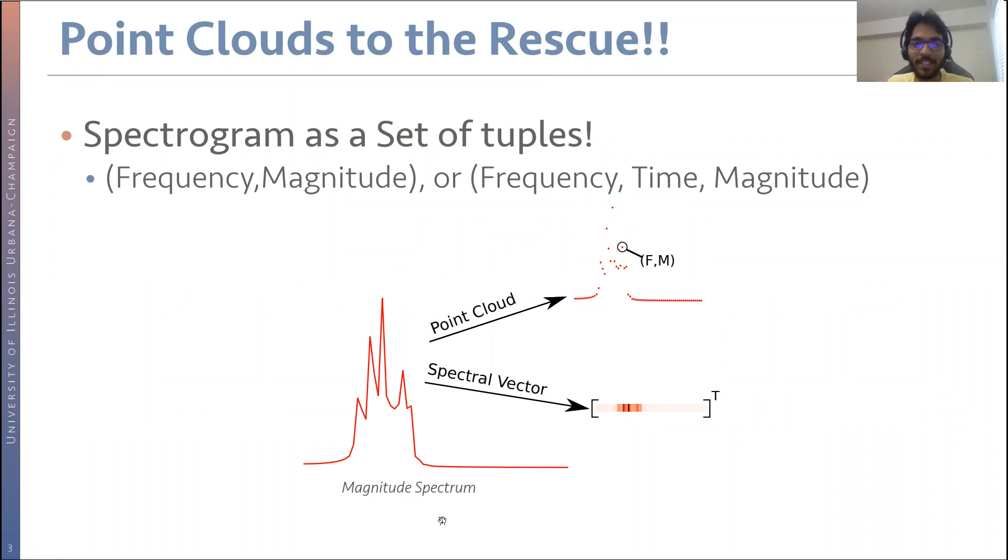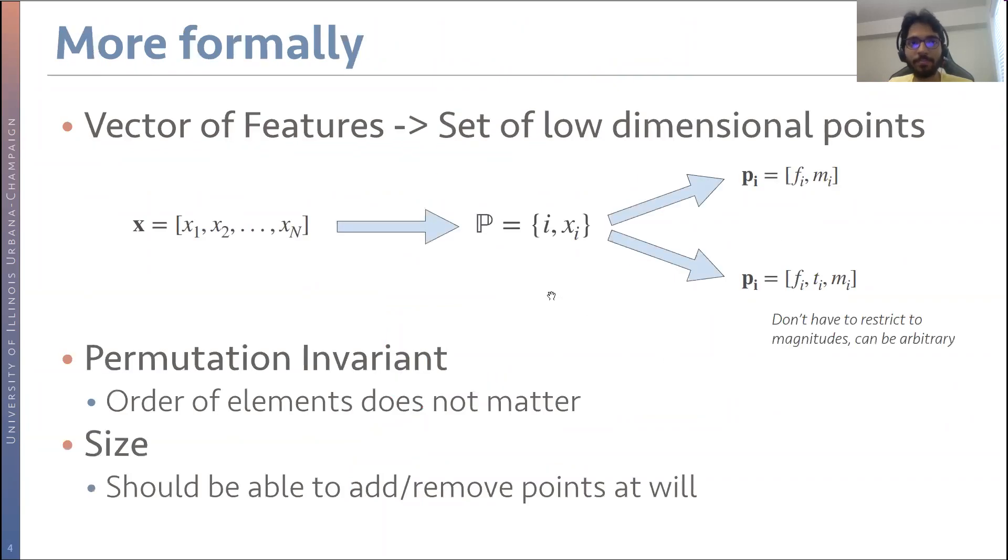If we have a magnitude spectra like this, conventional models represent this as a spectral vector. But as a point cloud, we would represent it as a collection or set of these frequency magnitude tuples. Instead of representing these as a vector of features, we move to representing our input audio as a collection of low dimensional points. Each point could be the frequency magnitude tuple or the frequency time magnitude tuple more generally. We don't have to restrict ourselves to the magnitudes. It could be more arbitrary. We could have complex numbers or we could have the real and imaginary parts of the magnitude and phase.